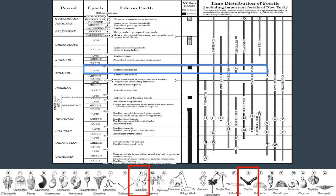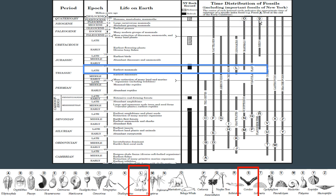Then we're going to take a look at S - I can pronounce that one. It's a condor, which is a bird. S exists right here. Now, birds existed - if you notice right here on Life on Earth, you have earliest birds, which is why the little bar graph starts here. However, the condor in particular existed during the Pleistocene epoch.